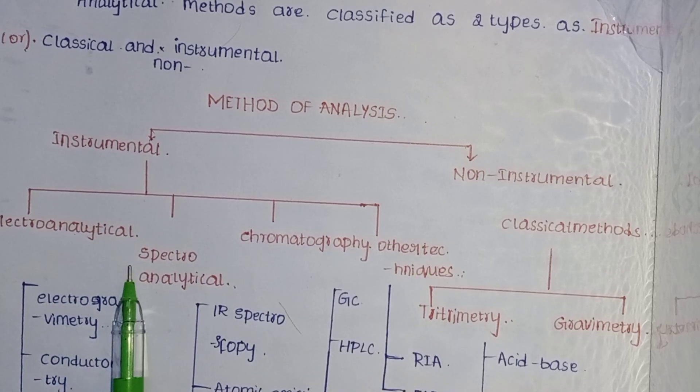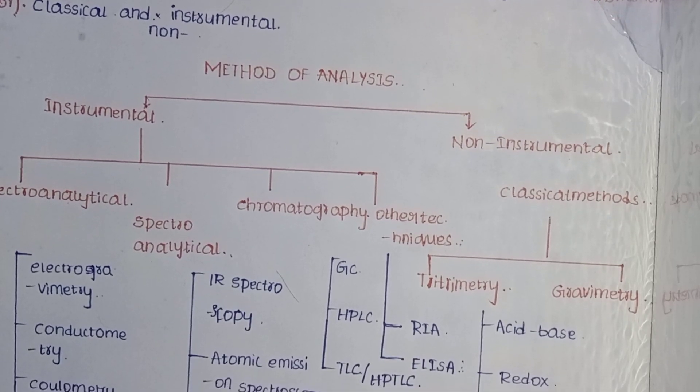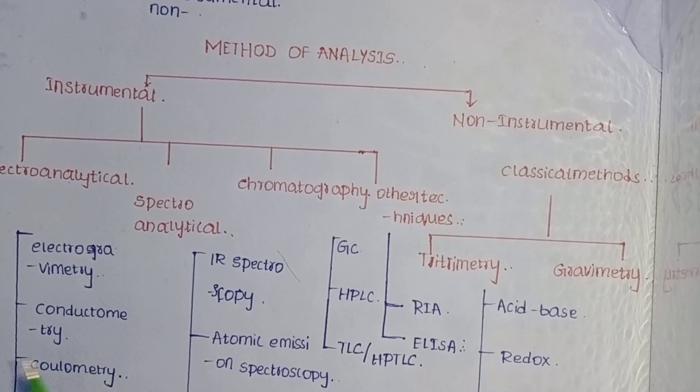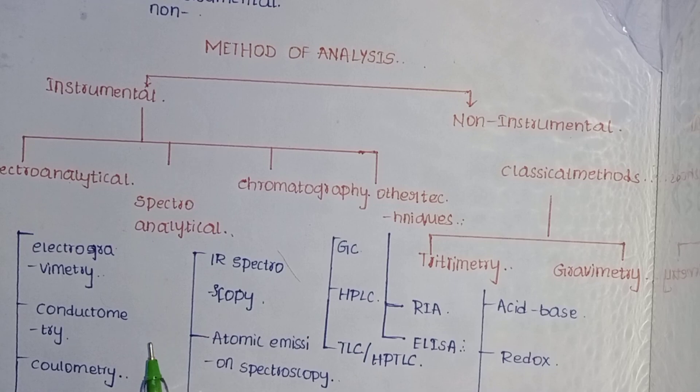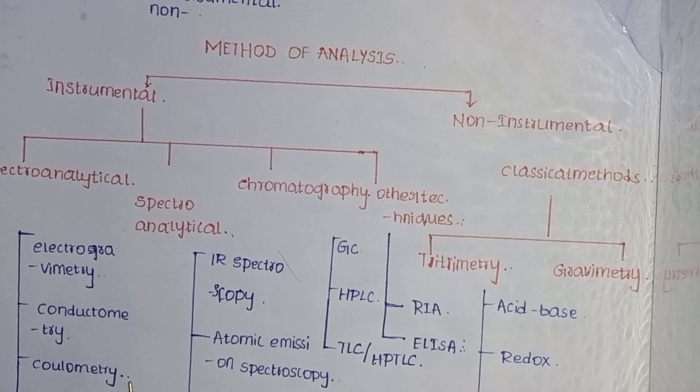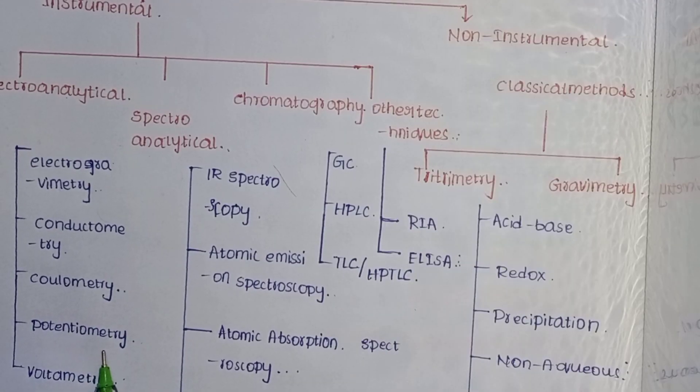The electroanalytical method is subdivided into five types: electrogravimetry, conductometry, coulometry, potentiometry, and voltammetry.